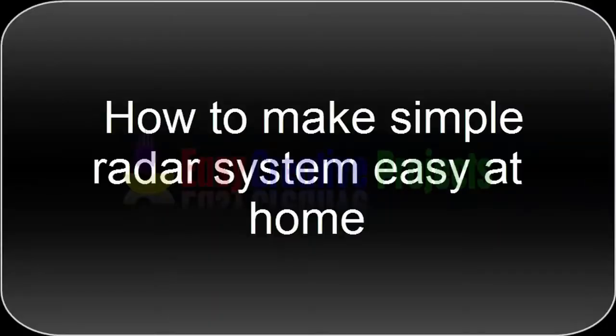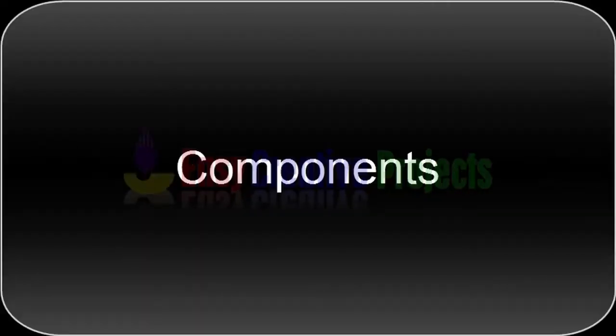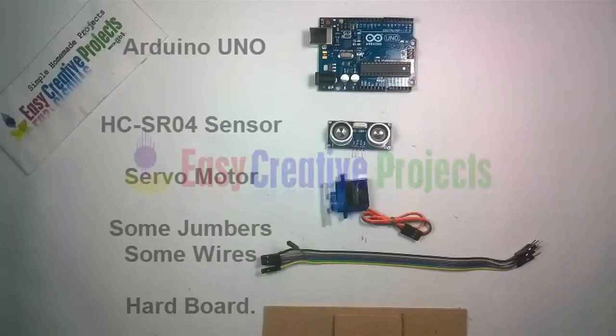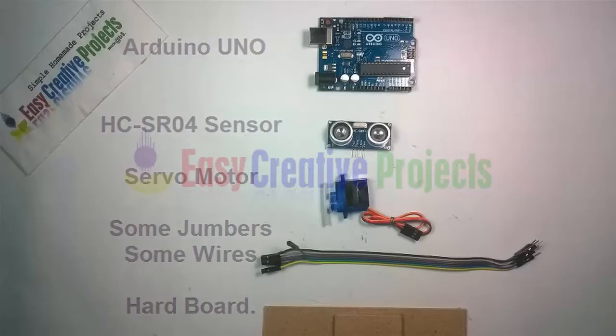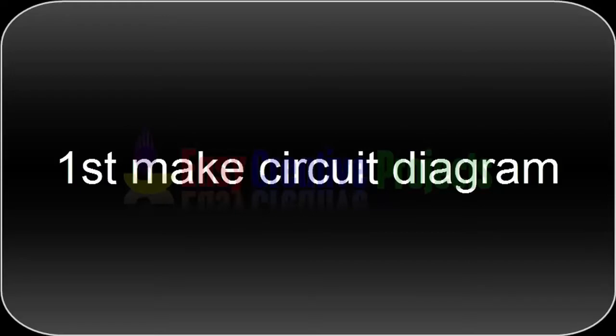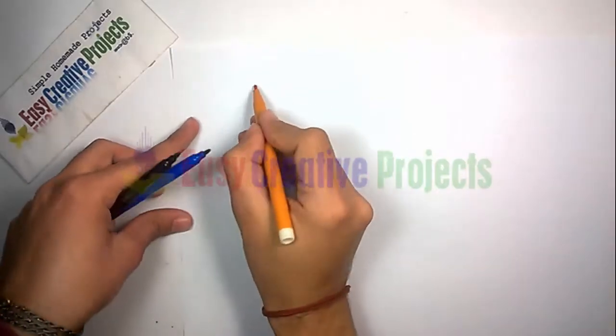Hello friends, today we learn how to make a simple radar system easy at home. For making this project we need some components: Arduino UNO, HC-SR04 sensor, servo motor, jumper wires, and hardboard. First, make a circuit diagram.